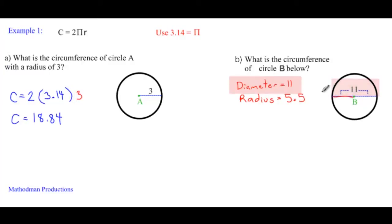Now all we have to do is substitute all our known information. So C equals 2. We're using 3.14 for pi times my radius, which is 5.5. Simplify from here and you get the circumference C equals 34.54.